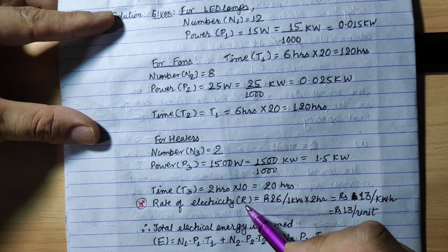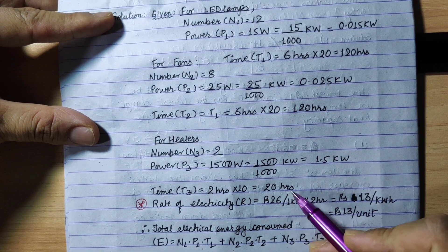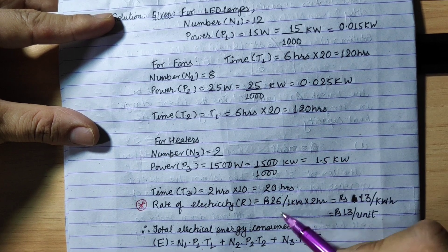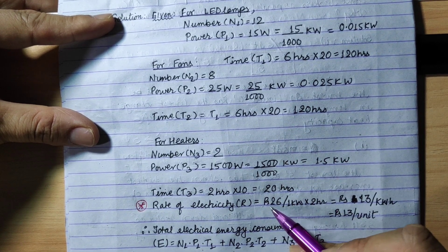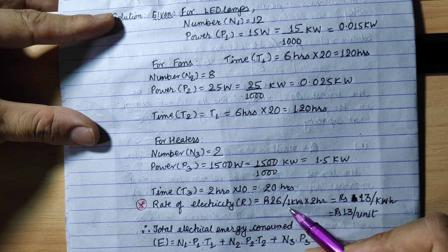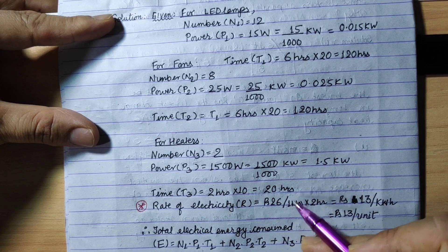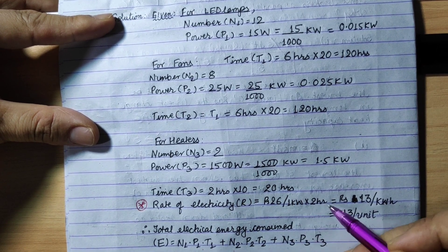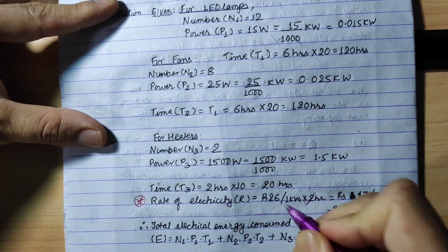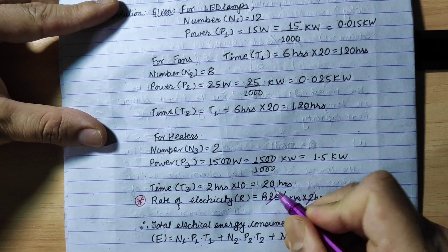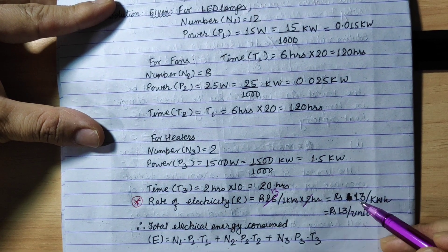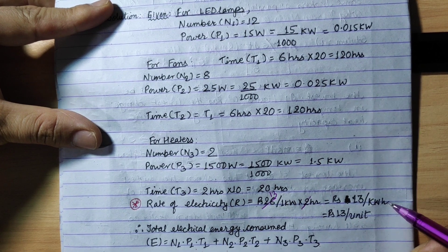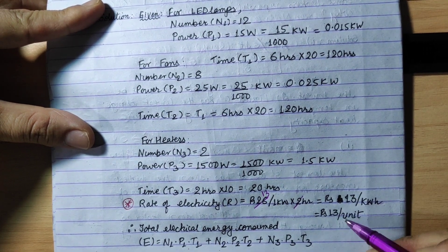The rate of electricity is Rs. 26 per 1000 watts for 2 hours, i.e., Rs. 26 per 1 kW for 2 hours. So the rate per unit = 26 ÷ 2 = Rs. 13 per kilowatt-hour. Therefore, rate = Rs. 13 per unit.